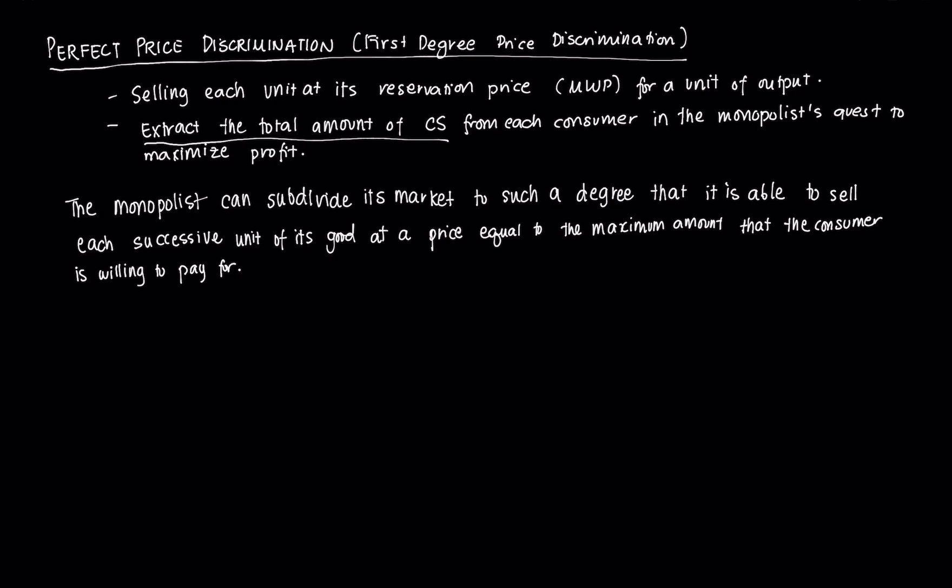Geometrically, you can think of the reservation price as the height of the demand curve. We can think of this demand curve, faced by the monopolist, as a willingness-to-pay schedule — the amount consumers are willing to pay for the units they purchase. Since the demand curve slopes downward, the consumer buying the first unit is willing to pay the highest price, the second consumer slightly less, and so on. The maximum willingness to pay declines with each successive unit purchased.